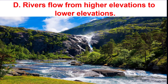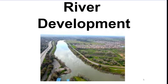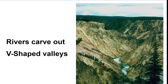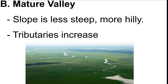A river always flows from high elevation to low elevation, downhill. Three stages of a river: the first is a youthful valley — a young river that's going really fast, on a steeper slope, and strong enough to move big particles. It carves a V-shaped valley. The way to remember V-shaped valley and rivers is that the word 'river' has a V in it.